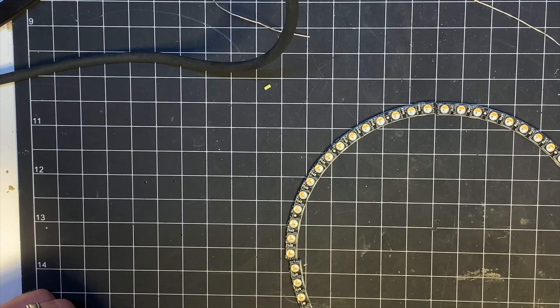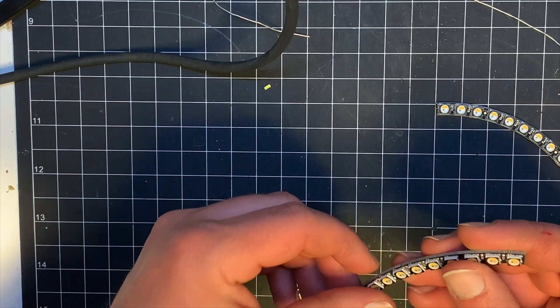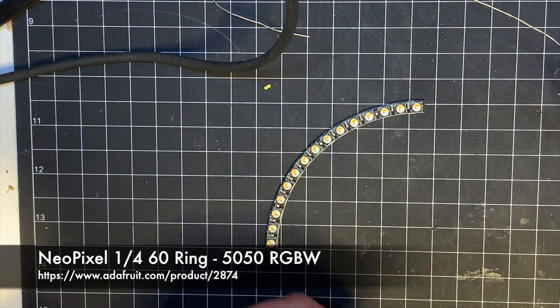This is the Neopixel ring. It's a 60 Neopixel ring and it comes in these quarter chunks.